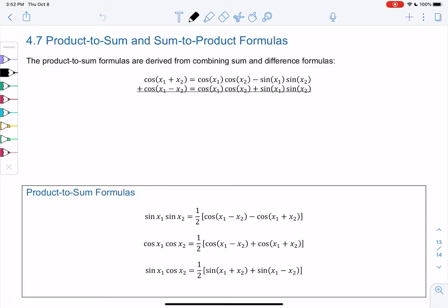Section 4.7, product-to-sum and sum-to-product formulas. We use these when we have a product and a sum is better, or we have a sum and a product would be better. Which right now is just practice, but in calculus there are times when we need one versus the other.